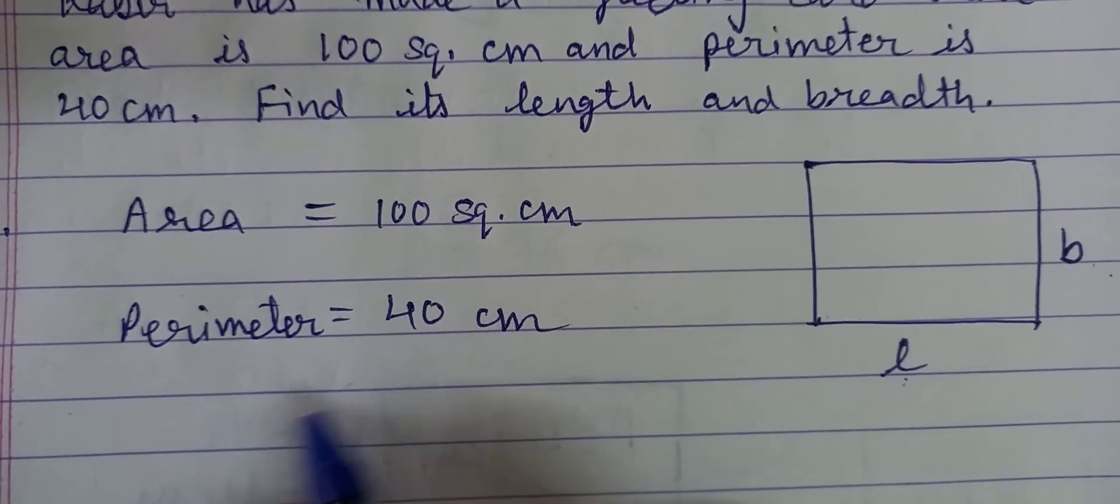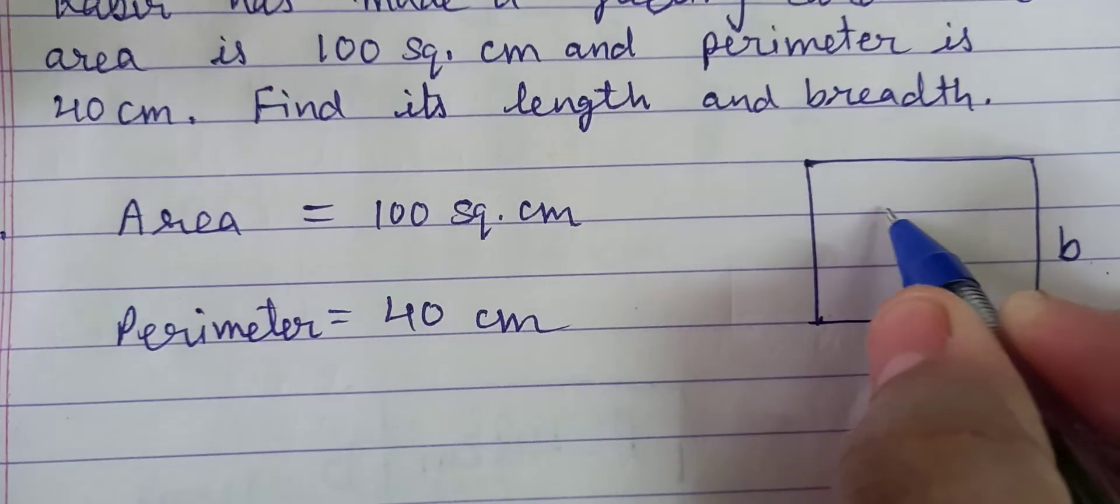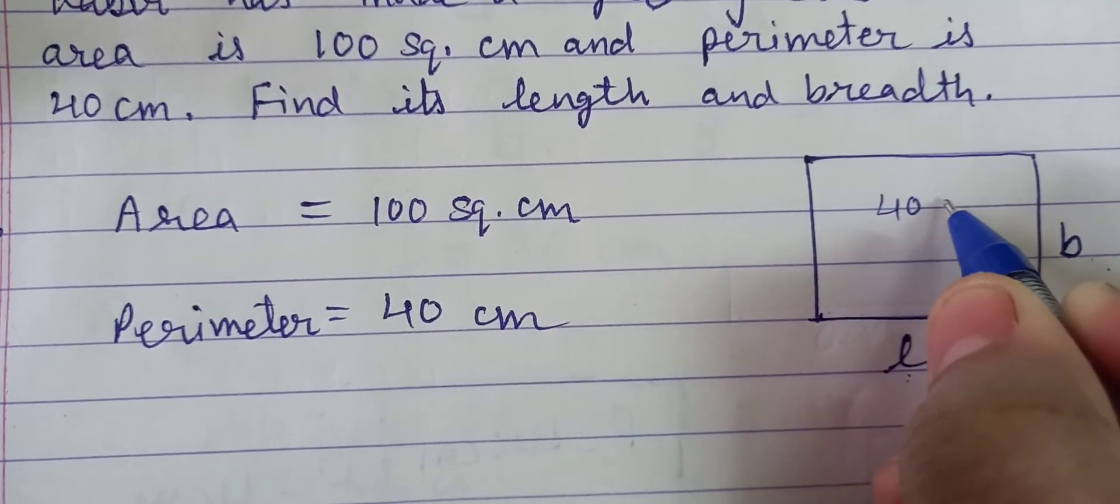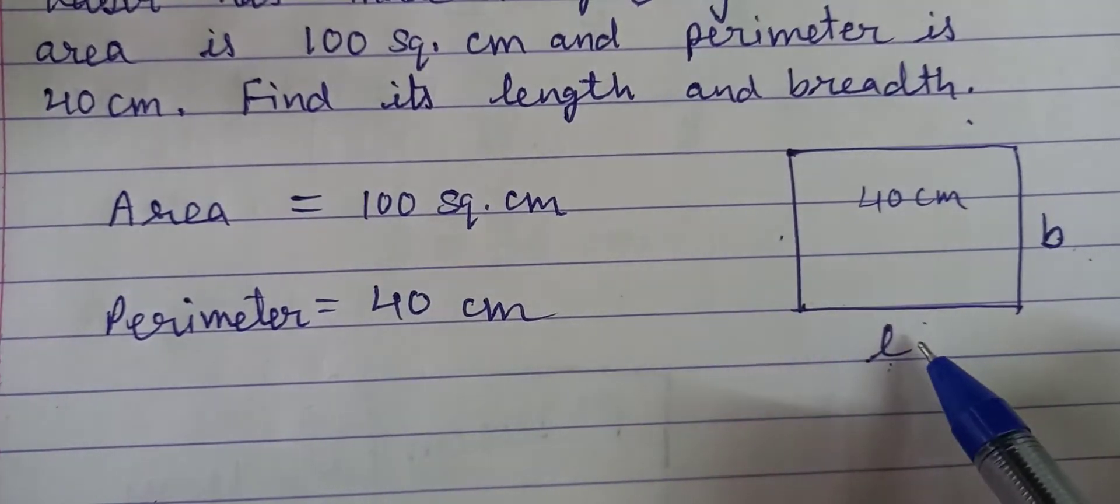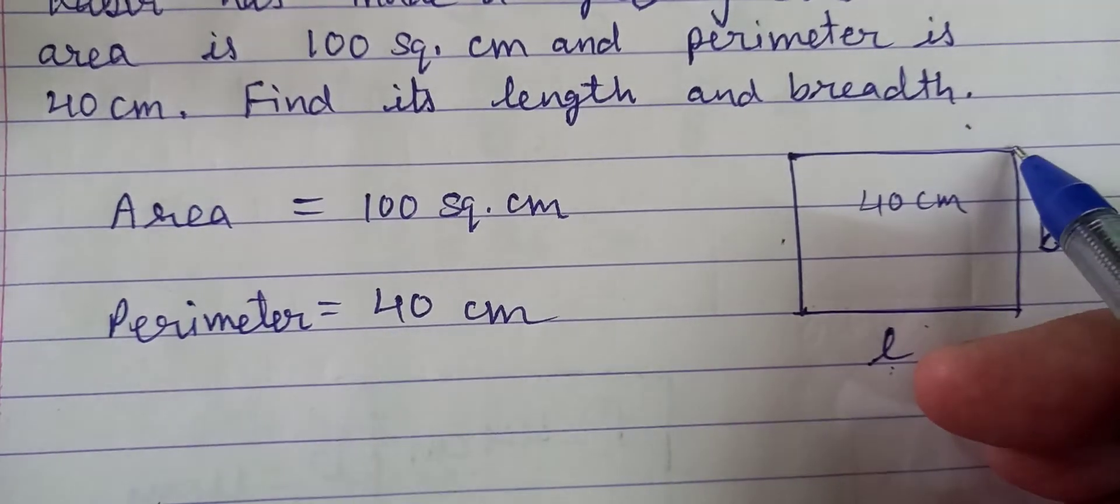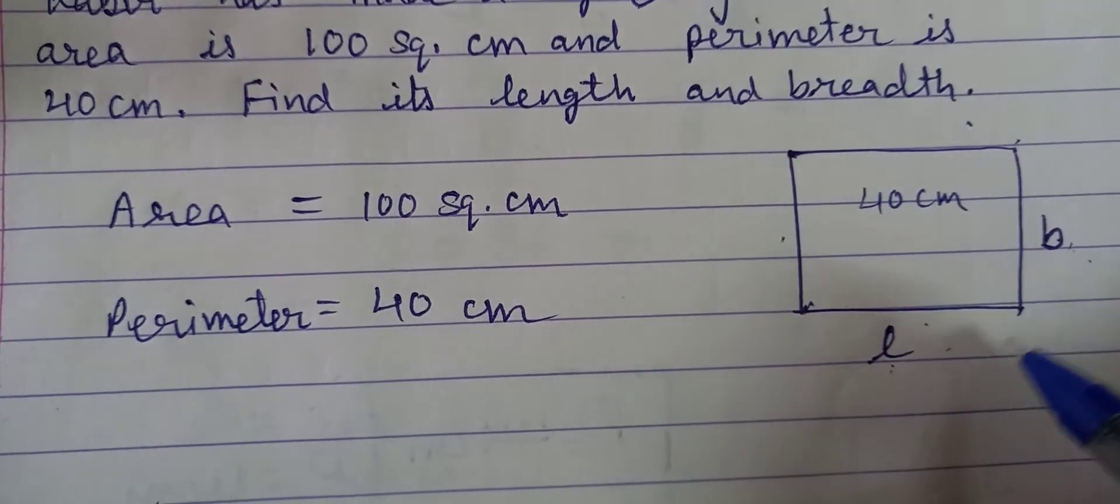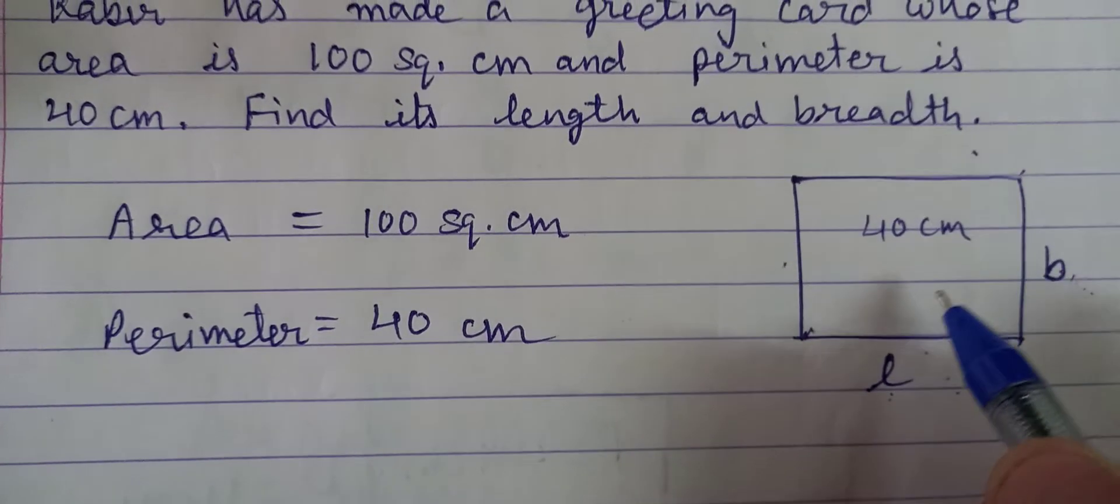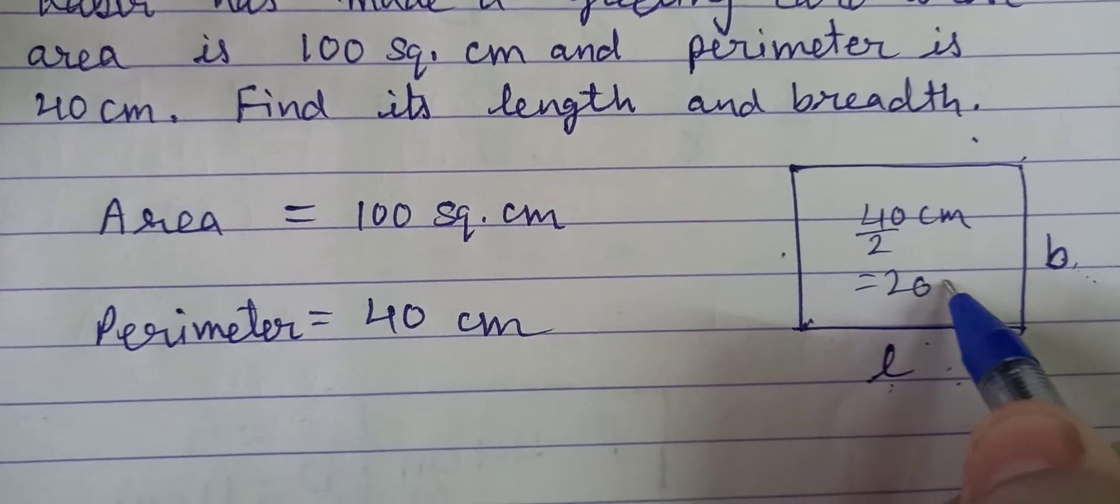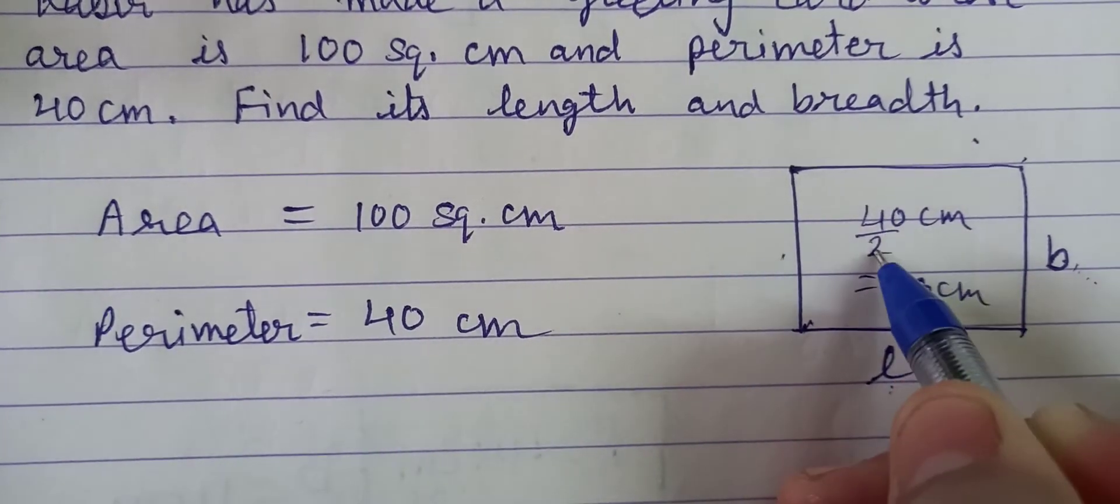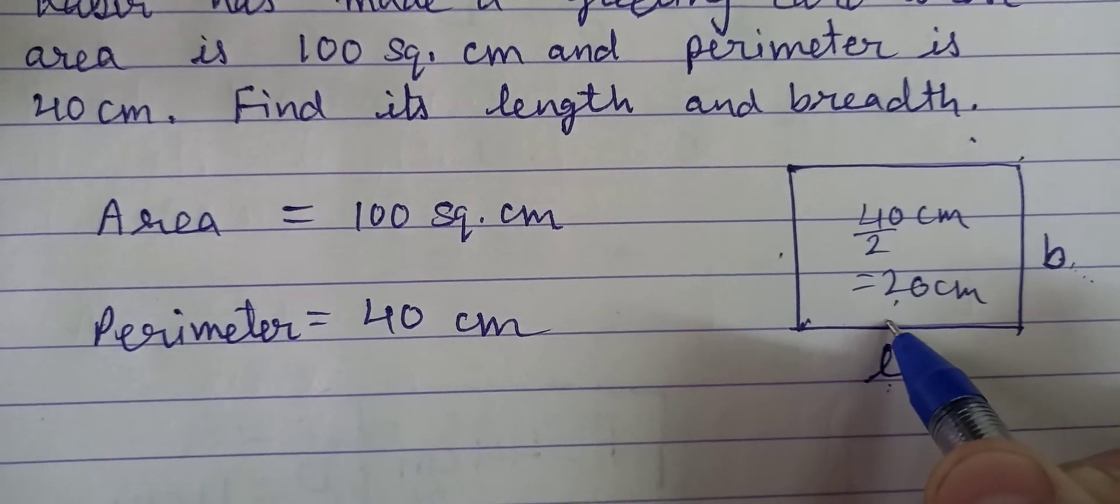So first we have to find the perimeter. If this perimeter is 40 centimeter, it means that these 4 sides of the sum is 40. So if we remove these two sides, how can we do it? 40 को 2 से divide करके, तो यह हमारा आया 20 centimeter.